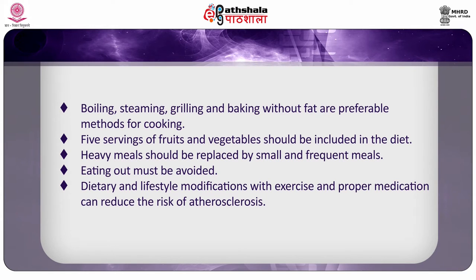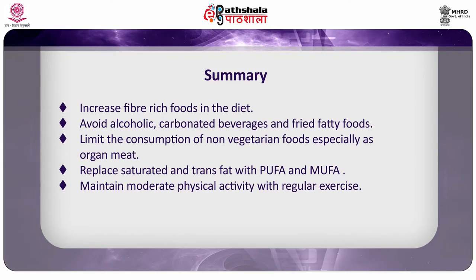To summarize: in cardiovascular disease, the cardiotonic diet must include more fiber-rich foods and less fat. Fried foods and alcohol must be avoided; carbonated beverages are also avoided. Non-vegetarian food items such as organ meat are limited. Saturated and trans fats should be replaced with PUFA and MUFA, and maintenance of moderate physical activity with regular exercise is also very important. Hope you understood well about the cardiotonic diet; let us meet in the next session. Thank you for listening.